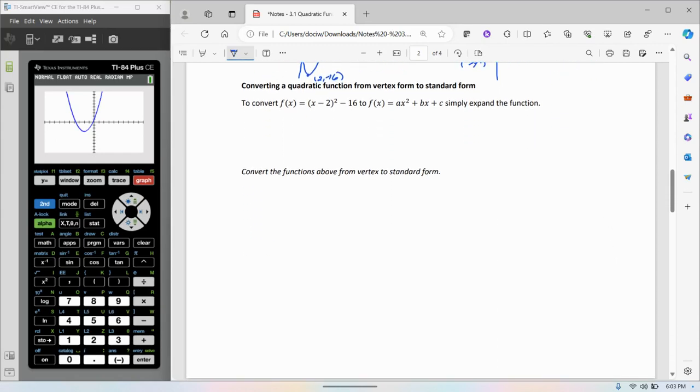Sometimes we're given an equation or a function in vertex form, and we need to convert that to standard form. Standard form is ax squared plus bx plus c. In order to accomplish that, all I need to do is expand this.